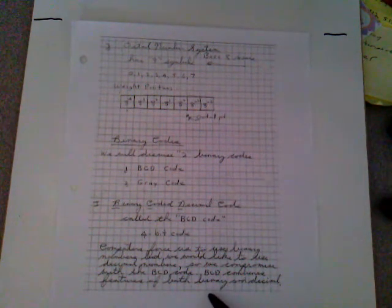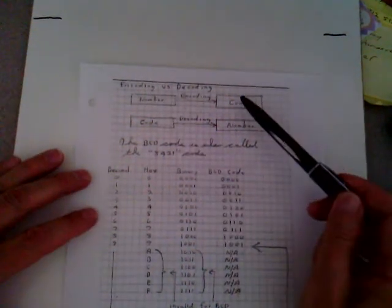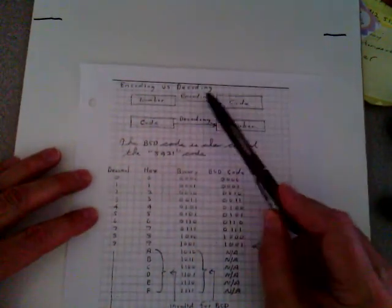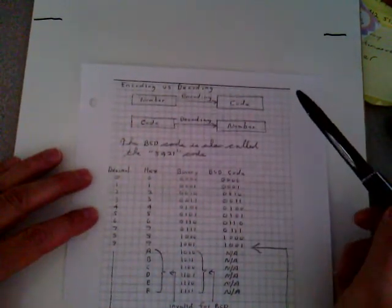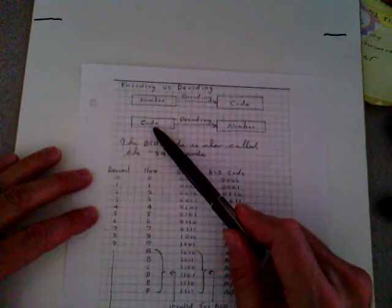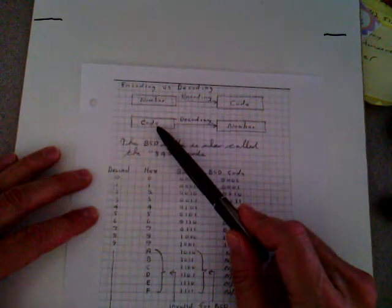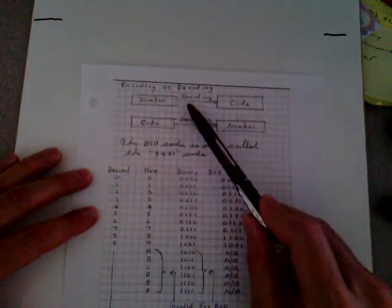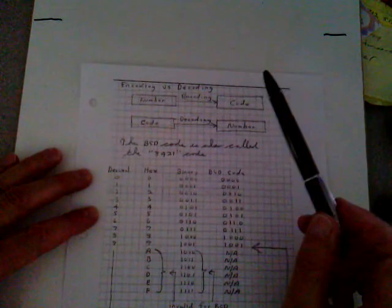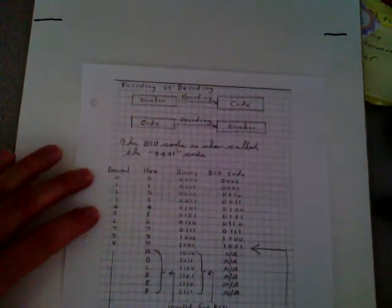BCD combines features of both binary and decimal. Before I show you examples of the BCD code, I want to mention the difference between encoding and decoding a number. If you take a number and put it in a coded format, it's called encoding. If you take that coded number and understand the intelligence behind the encoding process, you can use that intelligence to decode it back to the original number.